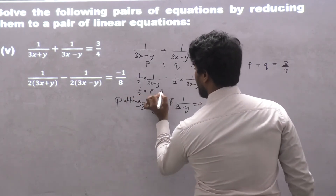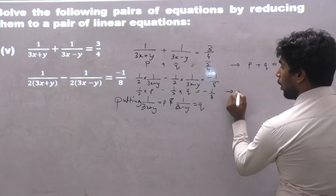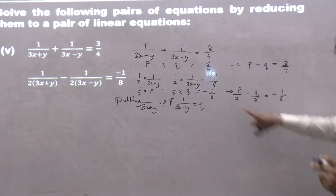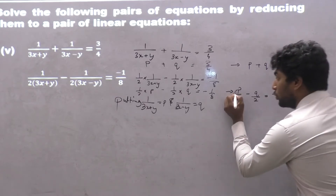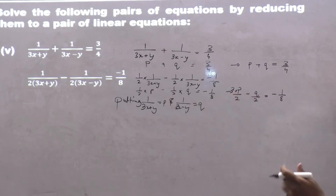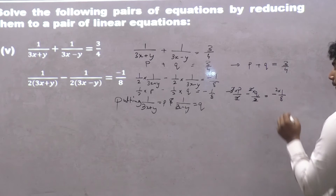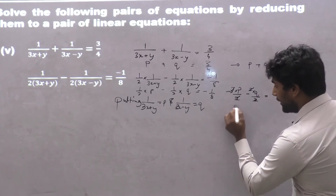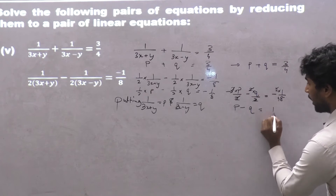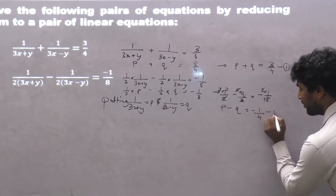The second equation becomes: (1/2)p minus (1/2)q is equal to minus 1 upon 8, which can be written as p upon 2 minus q upon 2 equals minus 1 upon 8. Multiplying throughout by 2, the 2s cancel and I get p minus q is equal to minus 1 upon 4. I mark this as equation number 1 and this as equation number 2.